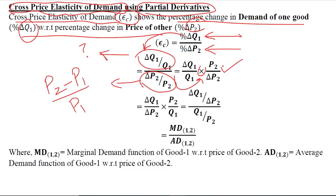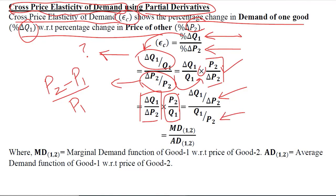The numerator has been reciprocalized. Further, we can gather the delta terms together and the non-delta terms separately. Reciprocalizing again, the delta terms are placed in the numerator and the non-delta terms are placed in the denominator.